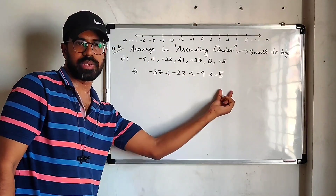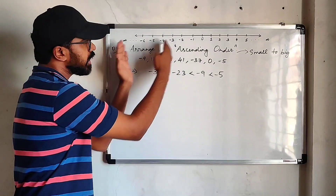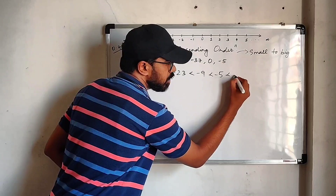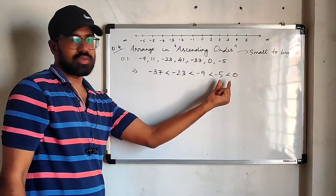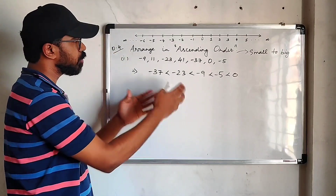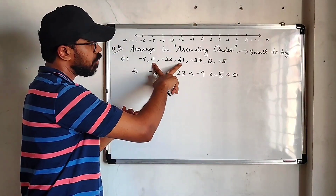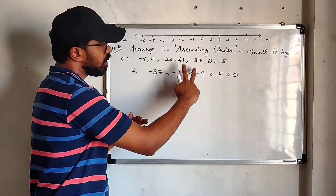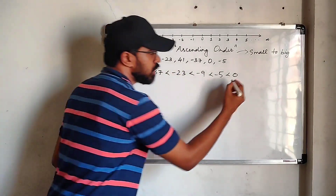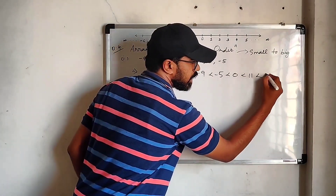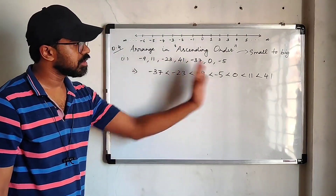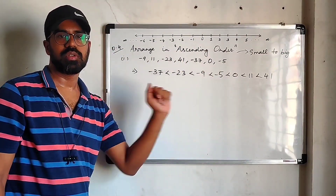We have arranged the four negative integers from small to big. Next comes 0 — yes, we have 0, so 0 is greater than minus 5. Then we move to positive numbers: we have 11 and 41. Between 11 and 41, 11 comes first as it is smaller, so 11 is less than 41. That is the complete ascending order arrangement.